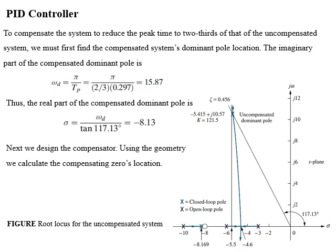Looking at the figure which represents the root locus for the uncompensated system operating at a damping ratio of 0.456 or 20% overshoot, the gain at this point is equal to 121.5 and the third pole lies at minus 8.169.